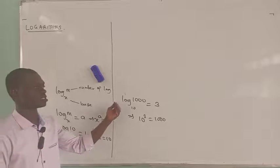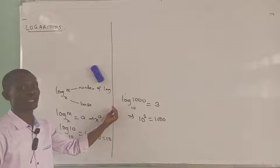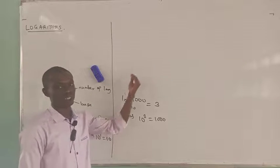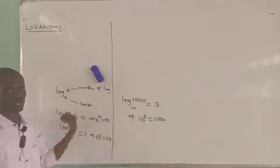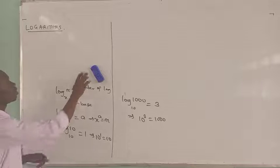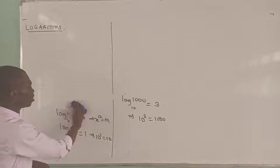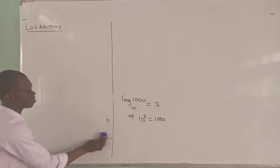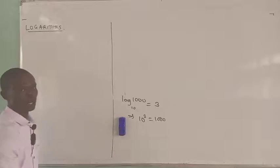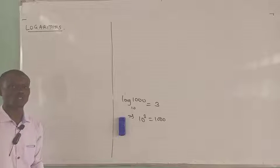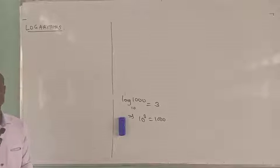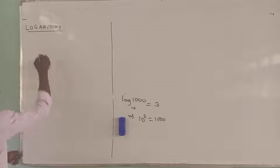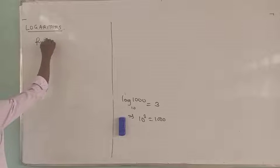That is the basic definition of logarithm and the relationship between logarithm and indices — that is why both of them actually go hand in hand. You can always convert an expression from logarithm to an indicial expression, and you can move an indicial expression into a logarithmic expression. So for us to be able to do mathematics involving logarithms, we also need the rules of logarithms, just as we have the rules of indices.